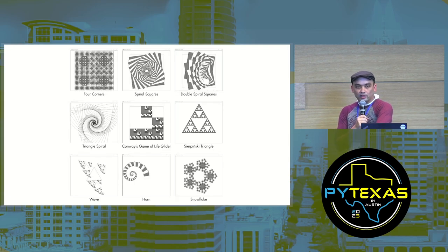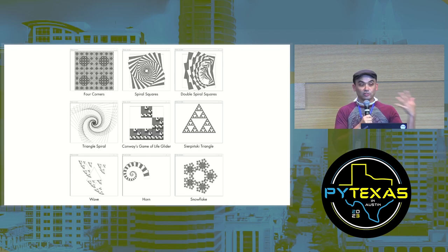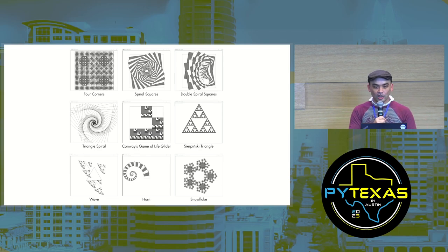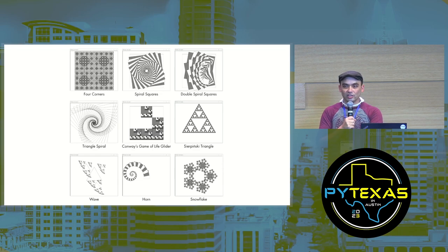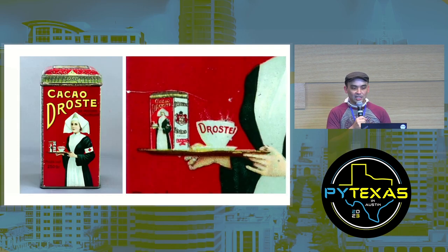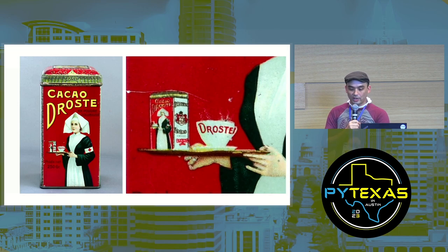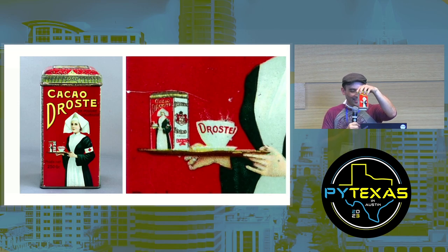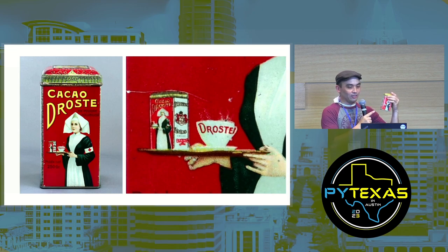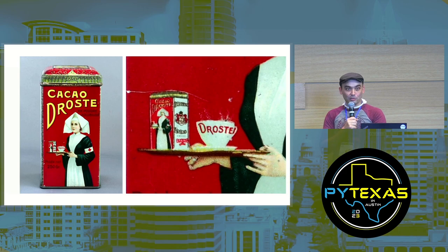We're not just limited to geometric shapes — you can apply recursion to images as well. This is a tin of a Dutch brand of cocoa called Droste Cocoa. I actually have one of these tins right here. The image is recursive — the image contains itself. We can create our own version using Python and the Pillow image library.